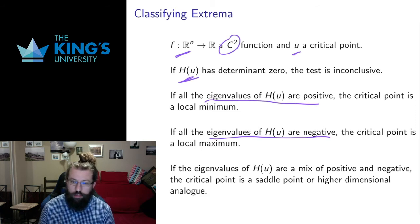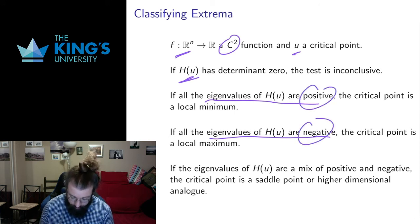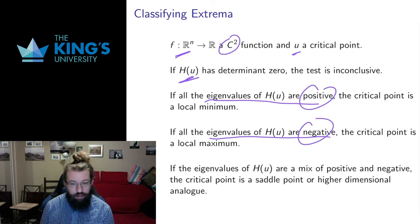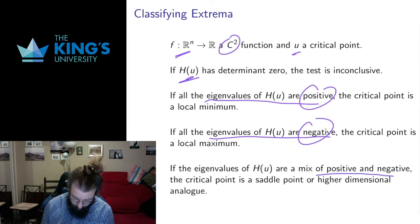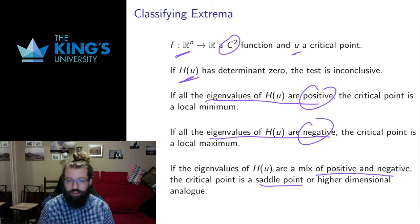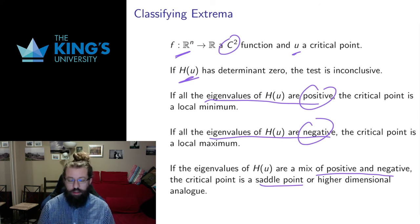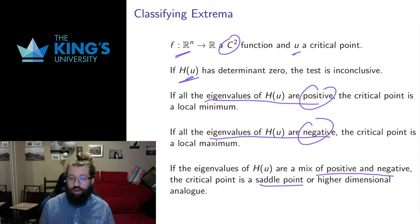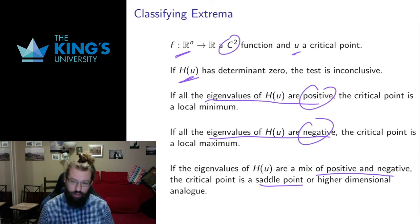If all eigenvalues are positive, I get a local minimum. If all are negative, I get a local maximum. This relates to concavity: positive is somehow concave up giving a minimum, negative is concave down giving a maximum. If I get a mix of positive and negative eigenvalues, I get something like a saddle point — the directions with positive eigenvalues give a minimum, and the directions with negative eigenvalues give a maximum. For a function of five variables, I could have two directions where it's a minimum and three where it's a maximum, giving a multi-dimensional version of a saddle point.